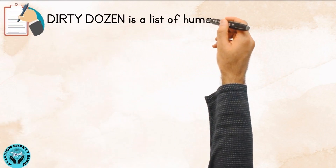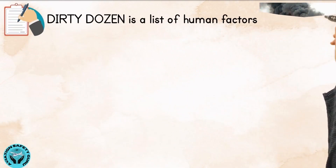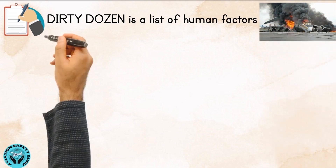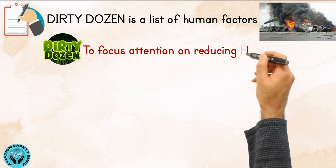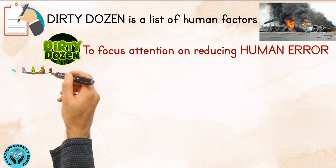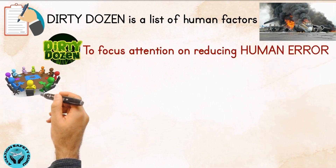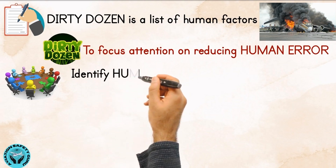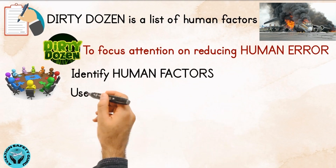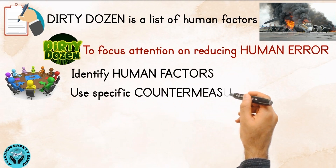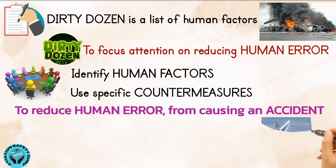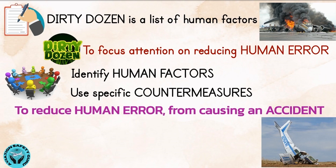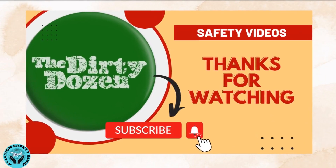In summary, the Dirty Dozen is a list of human factors that contribute towards accidents or incidents. The aim of the concept was to focus attention on reducing human error. Therefore, organizations should adopt a system to identify human factors and use specific countermeasures to reduce human error from causing an accident.